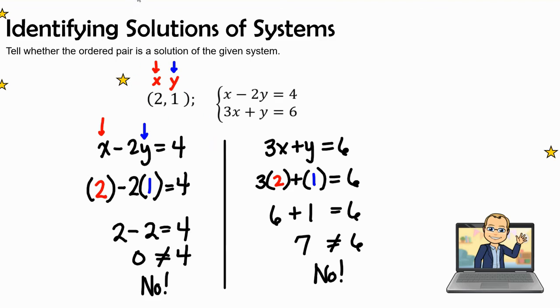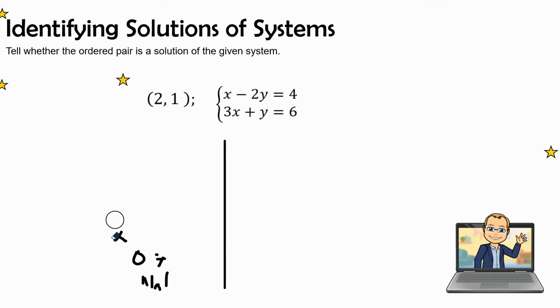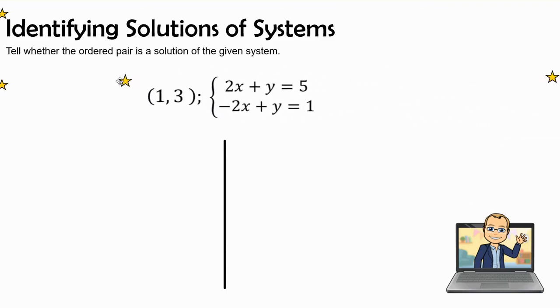So neither one of these lines that we have here cross through (2,1). So let's try another one. My phone is acting up while I am filming this video, so I apologize.